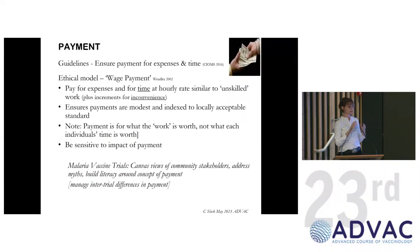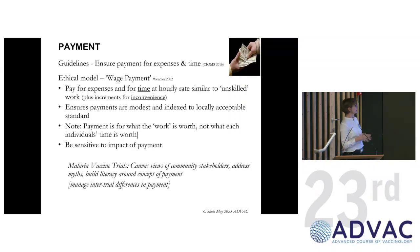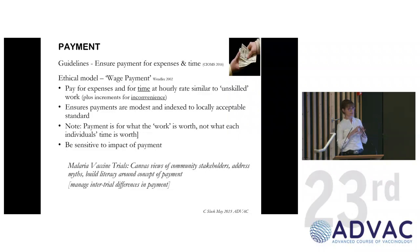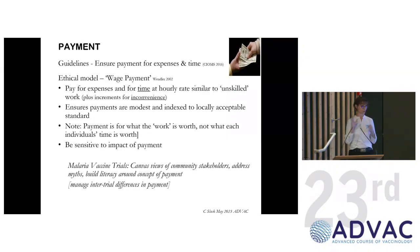On payments: guidelines argue to pay vaccine participants for their time and expenses, but don't provide a lot of details. A helpful model argues that you pay for expenses so people are not out of pocket, and you also pay for their time at a rate similar to unskilled labor — not to be dismissive of research participation, but because it doesn't require specialized skills and training. What you generally get here are quite modest payments. Malaria vaccine trials have argued that it's very important to stay close to how payment is interpreted in communities, as community members might think you're paying for blood or for risk, not for time and expenses. You really need community experts to find out what's going on.